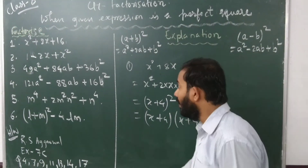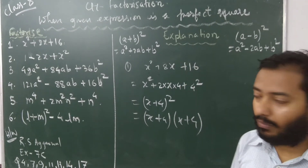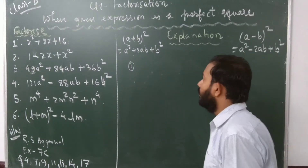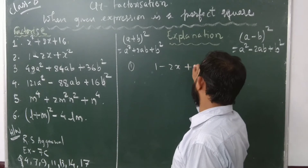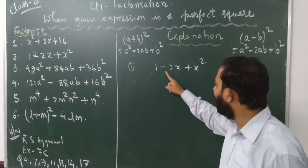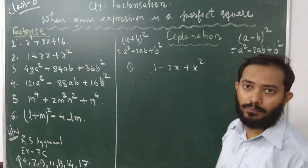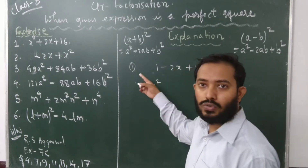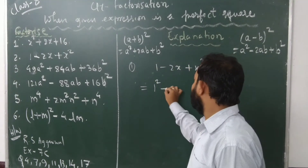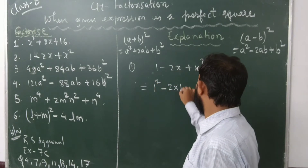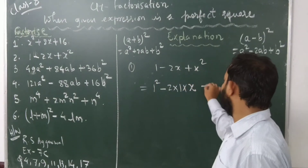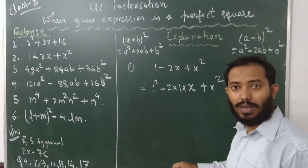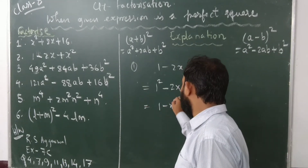Next, 1 - 2x + x². This is already in a standard form. The middle term has a minus sign, which means we use the (a-b)² formula. Check the extreme terms: 1 is 1², and x² is x². So 1 = a and x = b. We get a² - 2ab + b², which can be written as (a-b)², that is (1-x)².